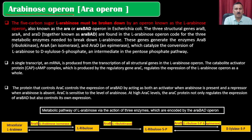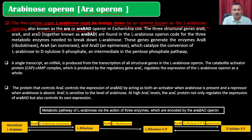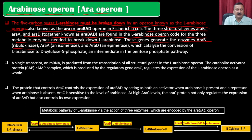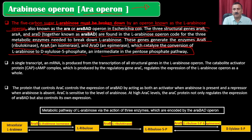The third operon is the arabinose operon, also called the ara or araBAD operon. The 5-carbon sugar L-arabinose must be broken down by this operon in E. coli. The 3 structural genes araB, araA, and araD encode 3 metabolic enzymes: araB (ribulokinase), araA (isomerase), and araD (epimerase), which catalyze the conversion of L-arabinose into D-xylulose-5-phosphate, an intermediate in the pentose phosphate pathway. L-arabinose is also part of a catabolic pathway.